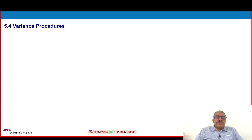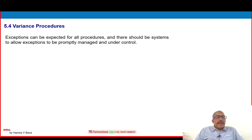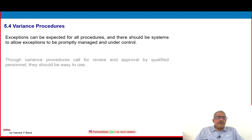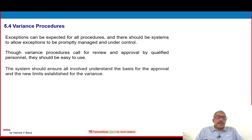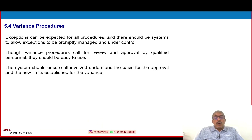5.4 — variance procedures. Exceptions can be expected for all procedures and there should be a system to allow exceptions to be promptly managed under control. Through variance procedures, these call for review and approval by qualified personnel; they should be easy to use. The system should ensure all involved understand the basis of approval and the new limits established for the variance.